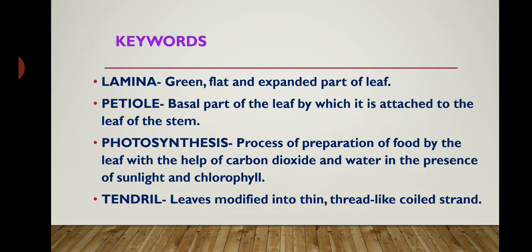Now let's discuss certain keywords. First is lamina — it is the green, flat and expanded part of the leaf. Petiole — the basal part of the leaf by which it is attached to the stem. Photosynthesis — the process of preparation of food by the leaf with the help of carbon dioxide and water in the presence of sunlight and chlorophyll. Tendril — leaves modified into thin thread-like coil strands.